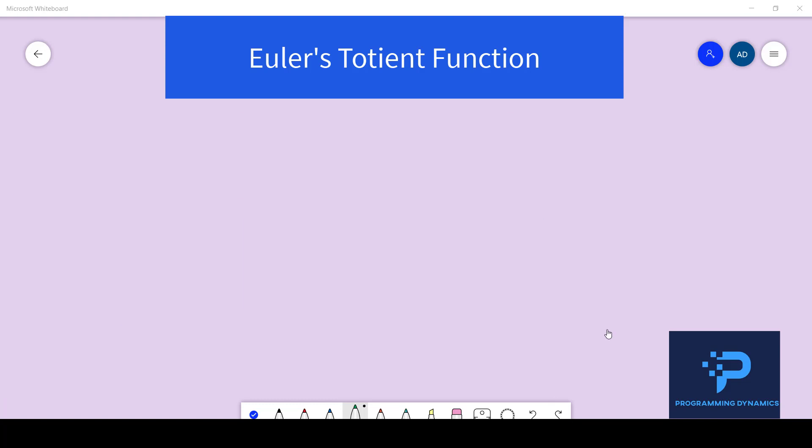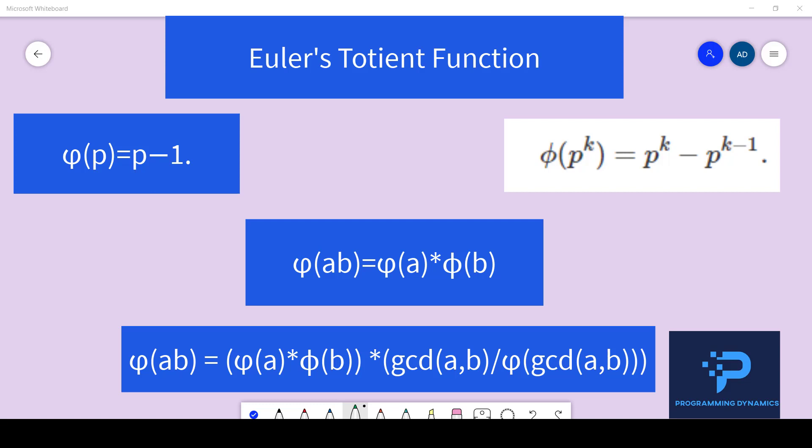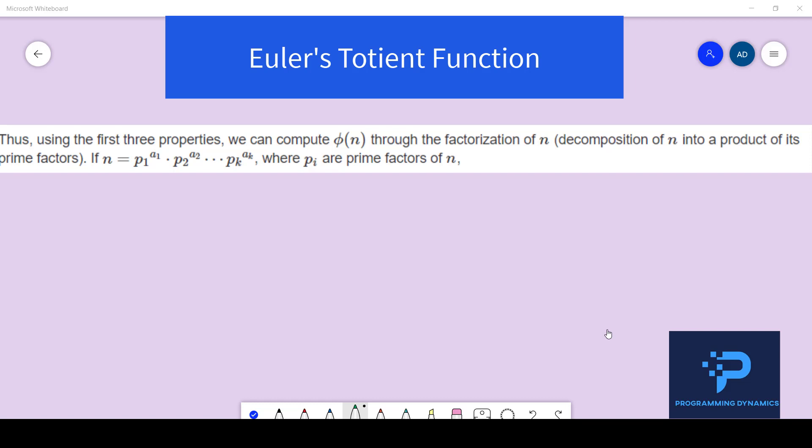So re-iterating these are the properties of the Euler's totient function and the purpose of me introducing you to these properties is that with the help of these properties we will be computing Phi of n and implementing our C++ code and we will be computing the Euler's totient function through the factorization of n which means decomposition of n into a product of its prime factors therefore if n equal to p1 to the power of a1 times p2 to the power of a2 times pk to the power of ak where pi are prime factors of n.